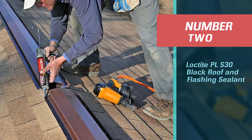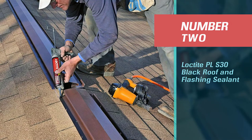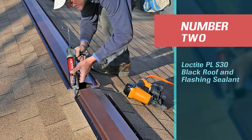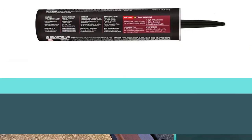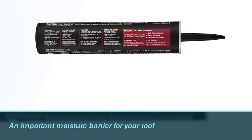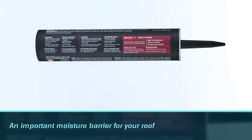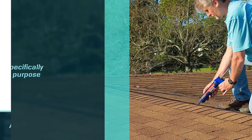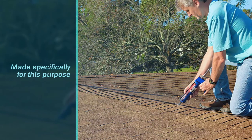Number two: Loctite PL S30 Black Roof and Flashing Sealant. Flashing is an important moisture barrier for your roof, but flashing that's damaged by storms or age can leave a roof vulnerable to moisture exposure. Unfortunately, the gaps created by damaged metal flashing can be difficult to access with many roof sealants.